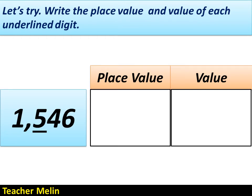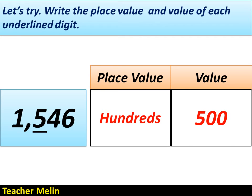Let's try. Write the place value and value of each underlined digit. The number is 1546. The underlined digit is number 5. What is the place value of 5? The answer is hundreds. And what is the value of 5? The answer is 500.